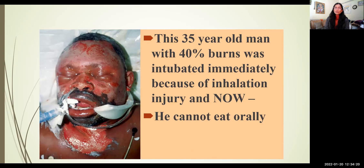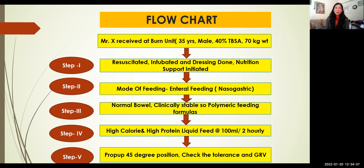Here is a simple example from my unit — a 35-year-old male with 40% burns who was immediately intubated due to inhalation injury and could not eat orally. His weight was 70 kg. After resuscitation and dressing at admission, nutrition support was initiated. We calculated his energy requirement using the Curry formula and protein at 1.5 g per kg body weight. We decided to feed him via nasogastric tube since he had normal bowel function and was clinically stable, using polymeric feeding formulas. The diet principle was high-calorie, high-protein liquid feed, starting at 100 ml per 2-hourly and increasing up to 300 ml per 2-hourly. The patient was propped up to a 45-degree position.